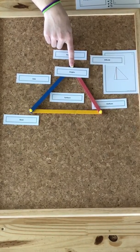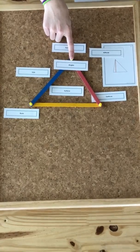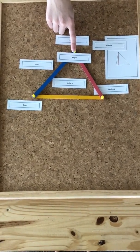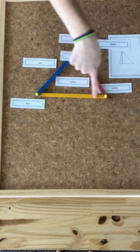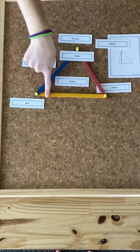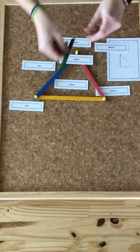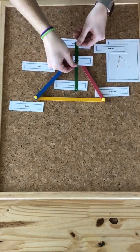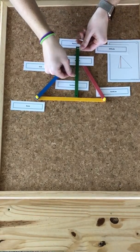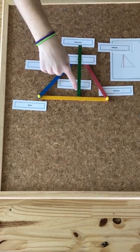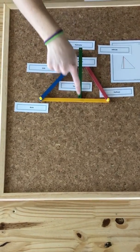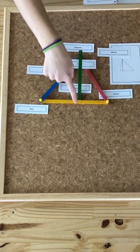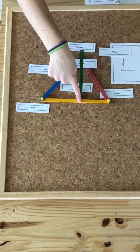So if you remember what perpendicular is when we studied different lines, a perpendicular line to the base, I'll get another stick to show you, would be right here. Remember, it would make two right angles. So this is the altitude from this vertex to this side.